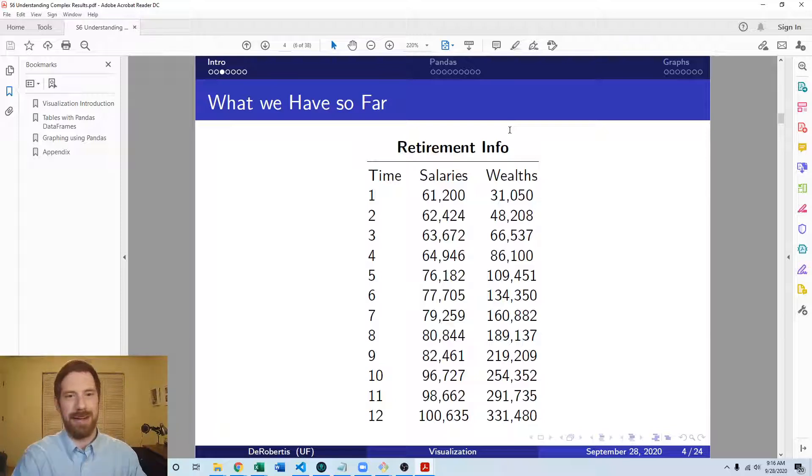In Python we've just been printing out sentences which say at year three you would have sixty three thousand dollars as a salary, so we haven't had a good way of displaying this information in Python yet.